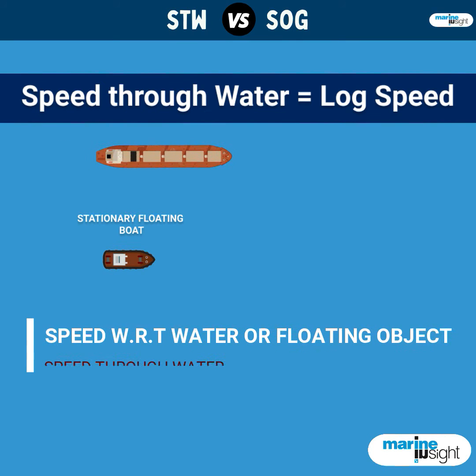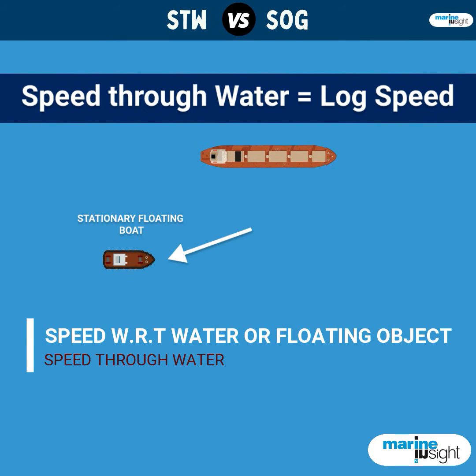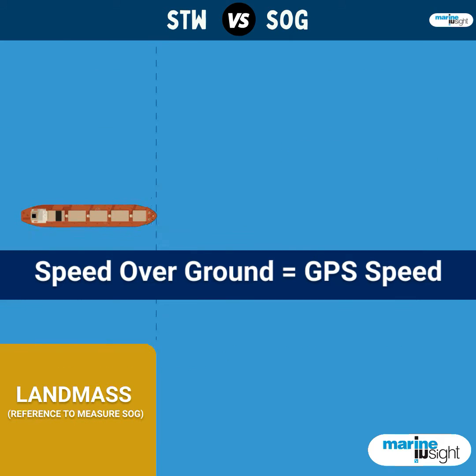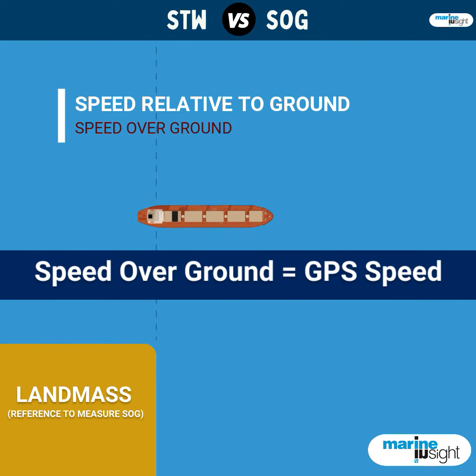Speed through water is the speed of the ship with respect to water or anything floating on it, whereas speed over ground is the speed relative to the ground.